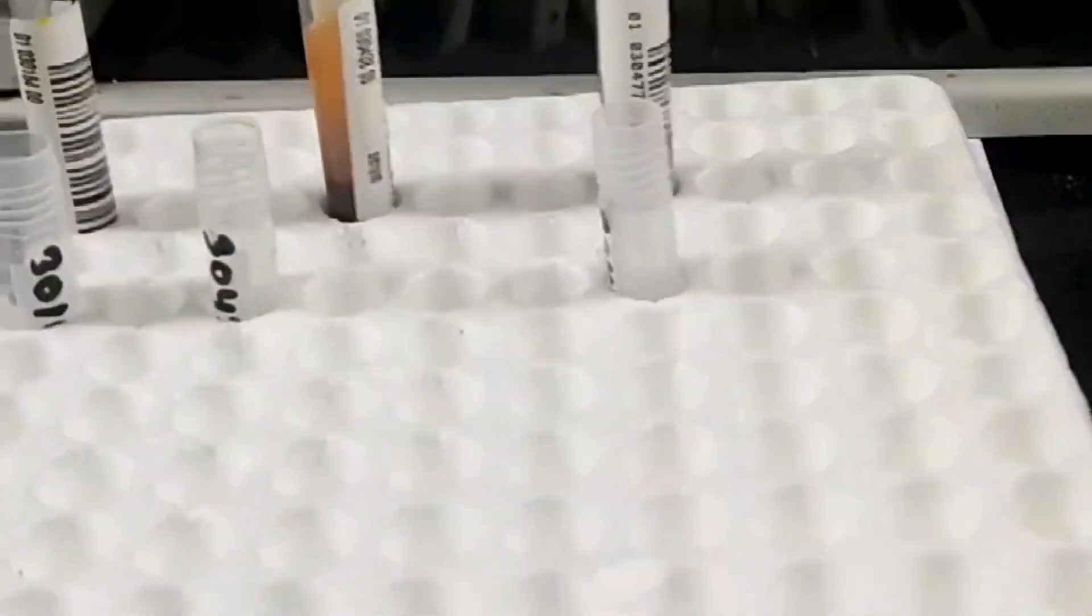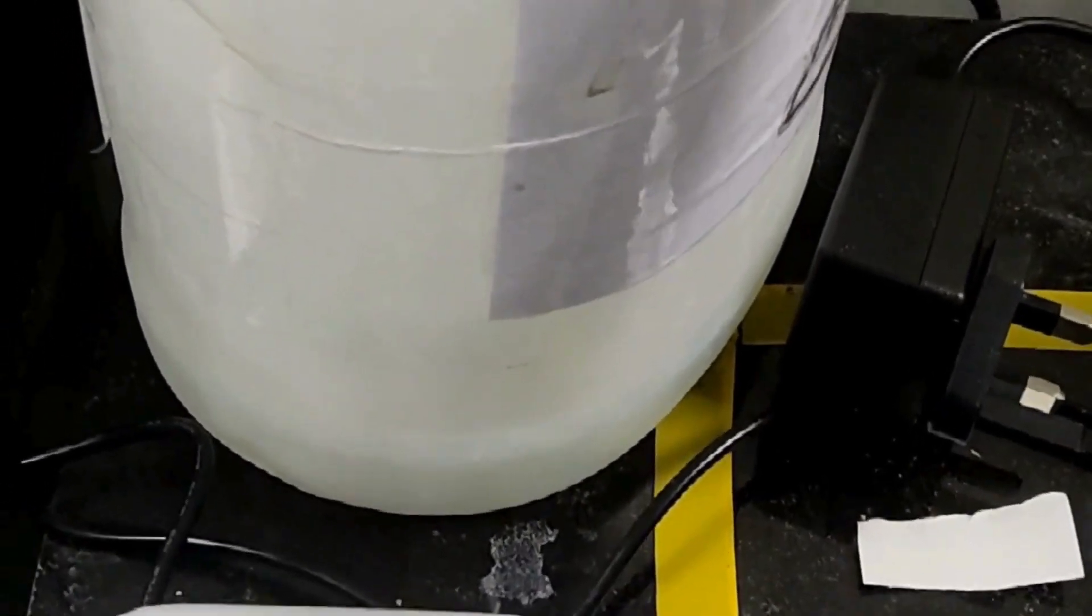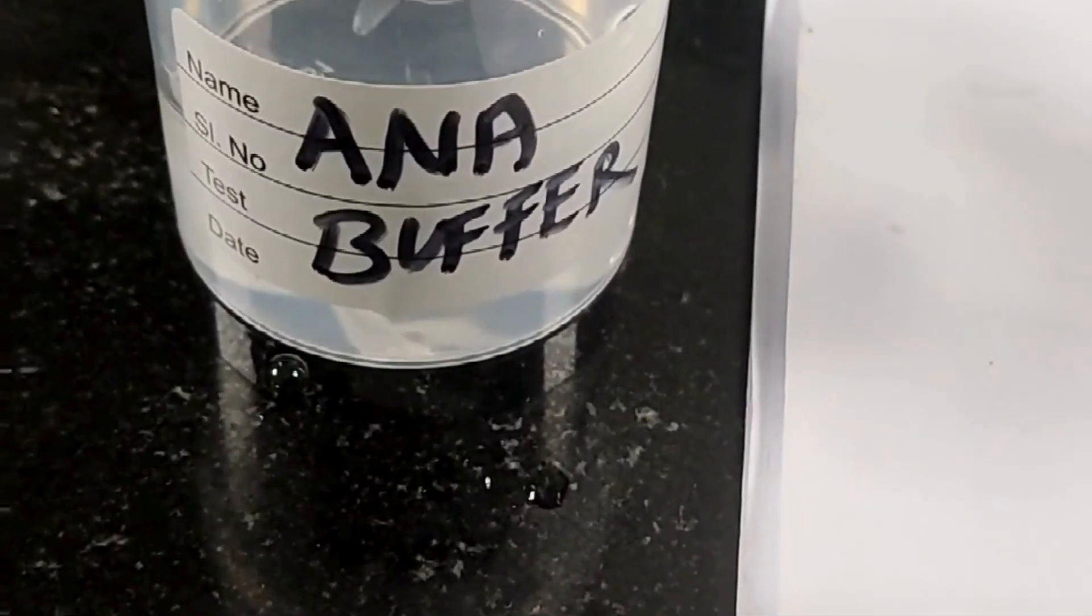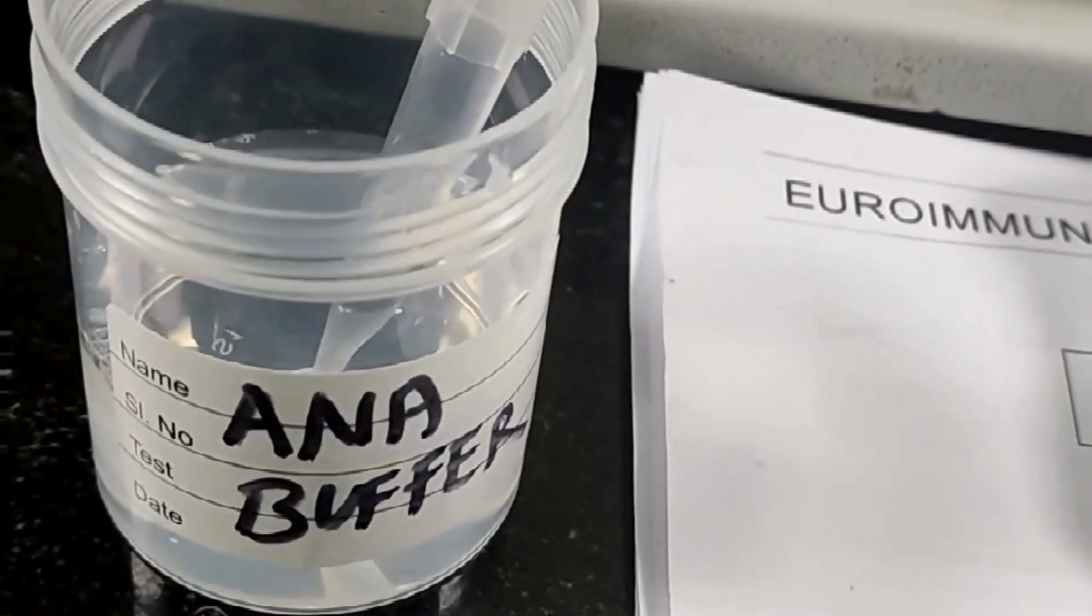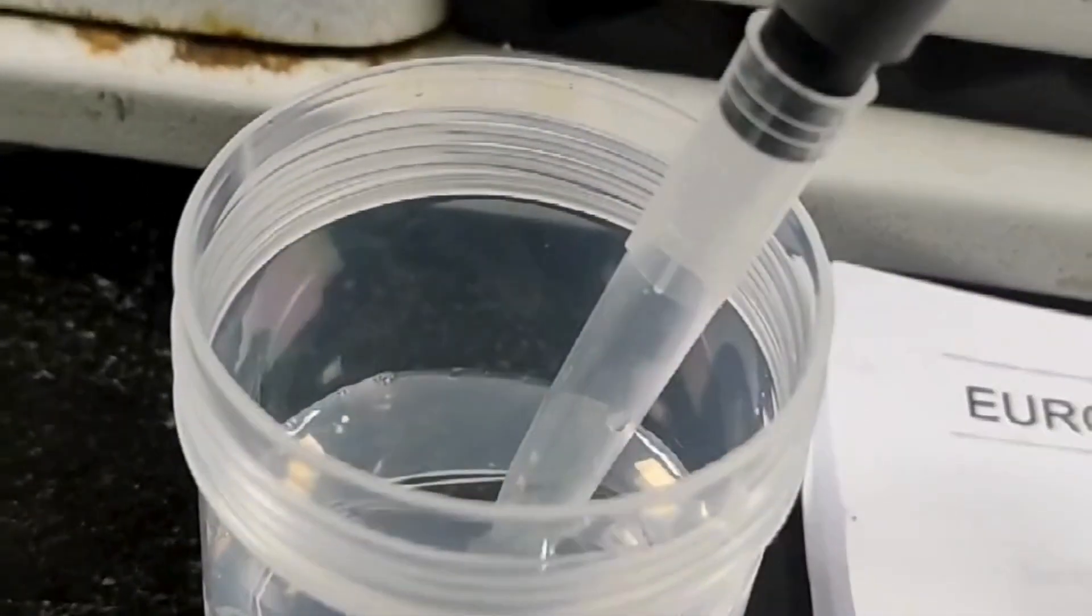After 30 minutes, we again dispense out the diluted sample from the tray. Now here comes our washing steps. We wash the test strips with 1500 microliter of wash buffer for three times in five minutes intervals.